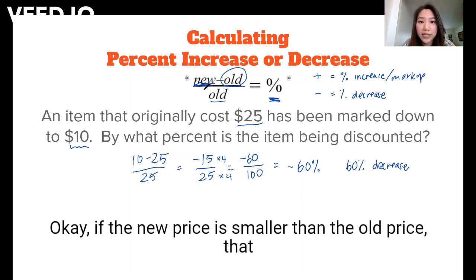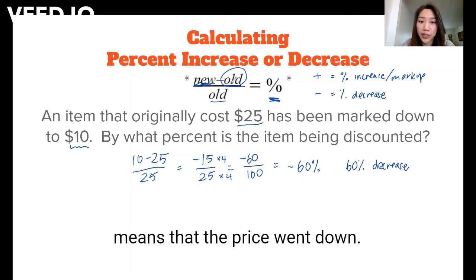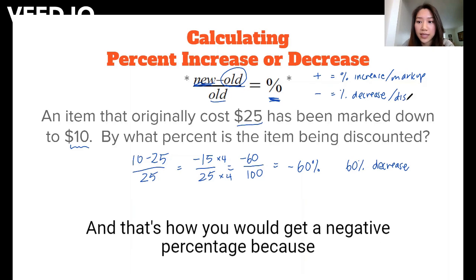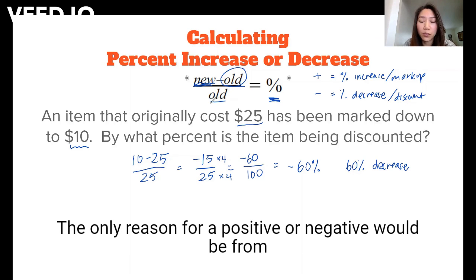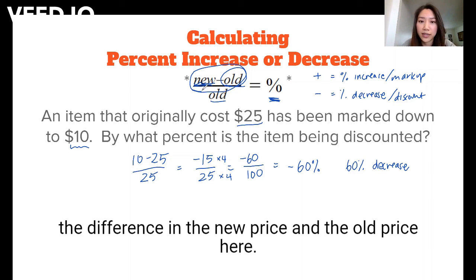If the new price is smaller than the old price, that means that the price went down. So that would be a discount. And that's how you would get a negative percentage because the prices will never be negative by themselves. The only reason for a positive or negative would be from the difference in the new price and the old price here.